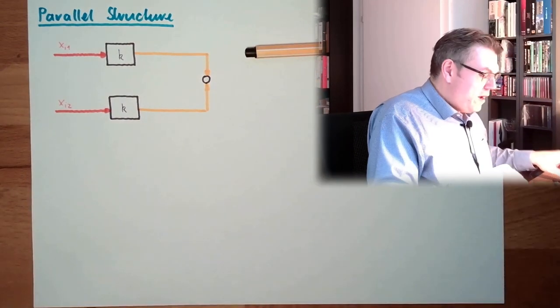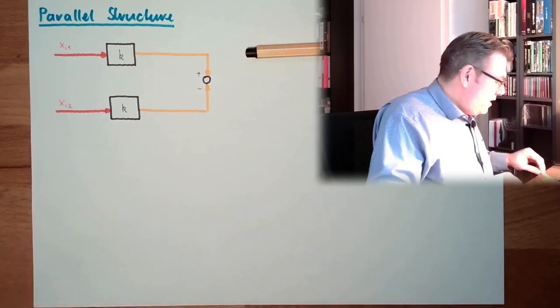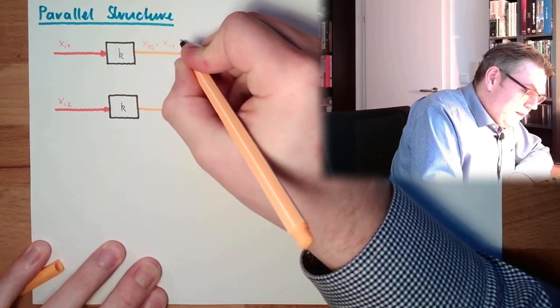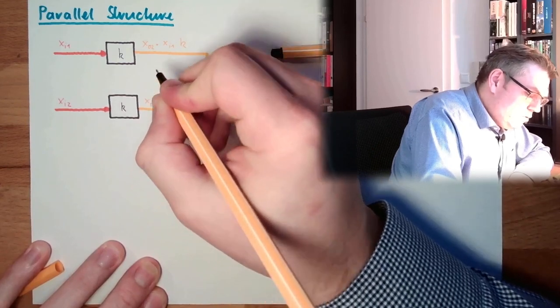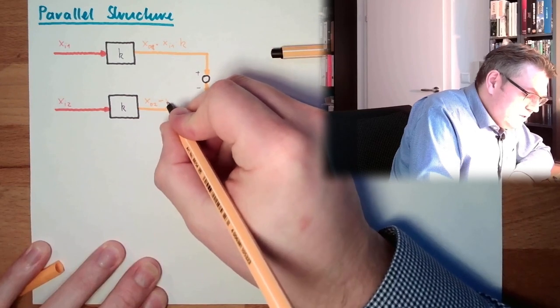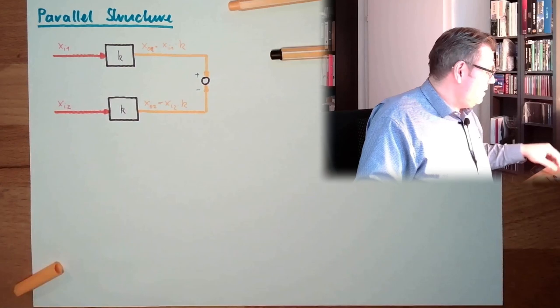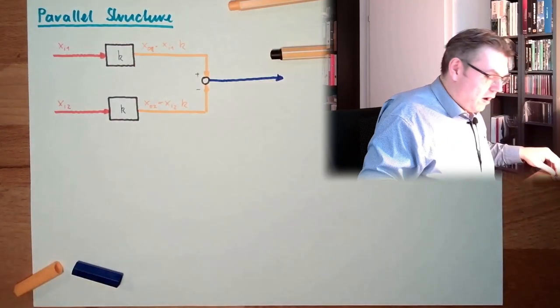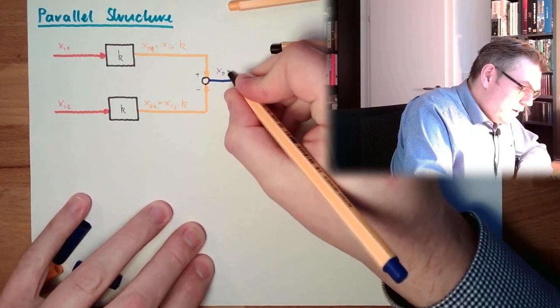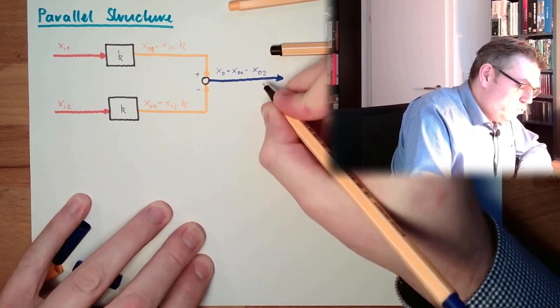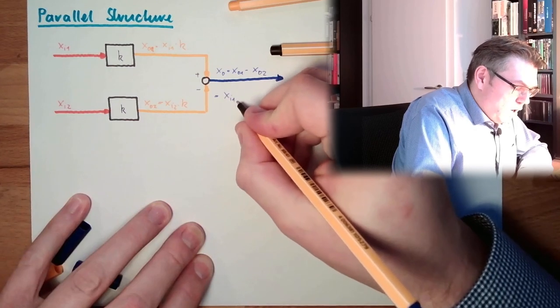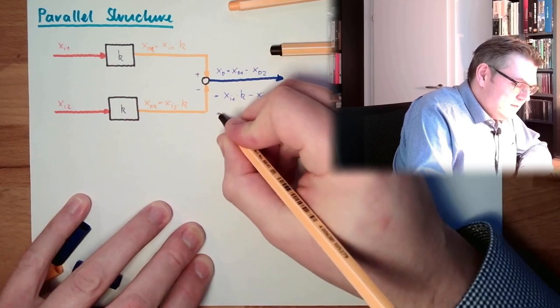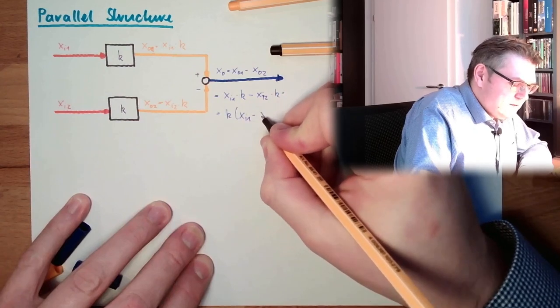In this mixing point, we have one plus and one minus. Here we have our XO1, which is XI1 multiplied by k. And here we have XO2, which is XI2 multiplied by k. In the end, we have our output XO equals XO1 minus XO2. This is XI1 multiplied by k minus XI2 multiplied by k, which is k multiplied by XI1 minus XI2.